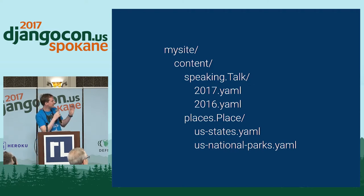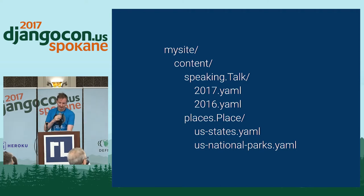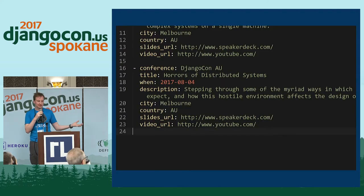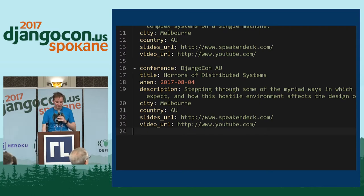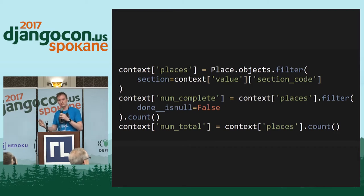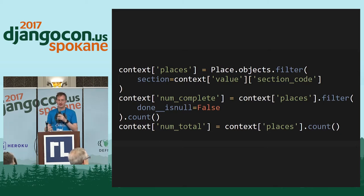It lets you have structures where you have files in a tree under different model names. For example, I have all my talks from this year in one YAML file. They look nicely formatted. I can do edits on these easily on the plane. It lets you use the Django ORM to query them like normal Django models, doing sorting, filtering, and even gets.